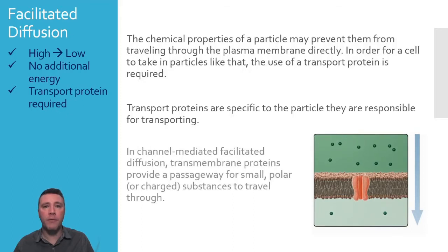In one type of facilitated diffusion, channel-mediated, transmembrane proteins provide a channel for small, charged ions to travel through. These transport proteins essentially form tunnels through which the particle can travel down its concentration gradient.